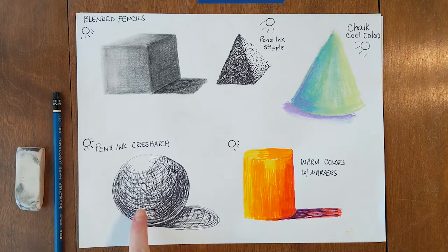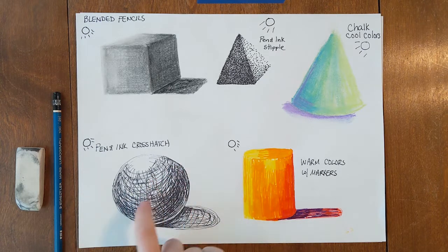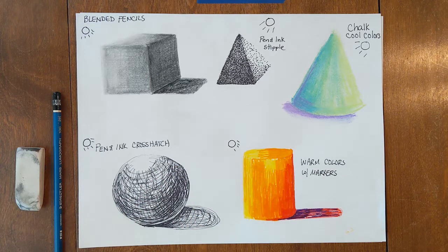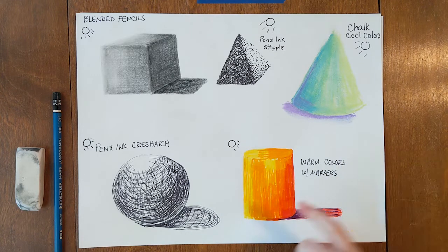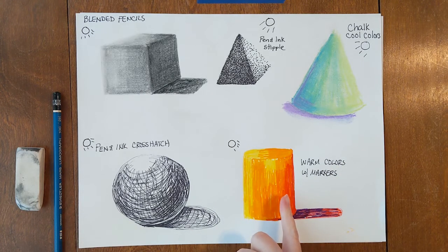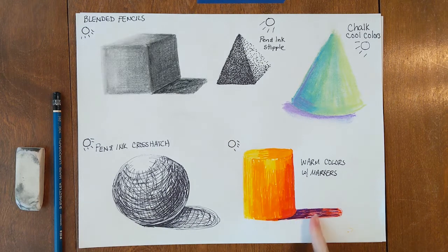So on this sphere over here, you can see I used pen and ink crosshatch, and that just means I used my pen and made lines that crisscrossed each other with a shadow. On the cylinder, I used warm colors, yellow, orange, and red. And I also used a little bit of purple in there for the shadow, and we'll talk more about that in a second.